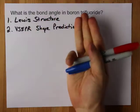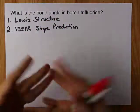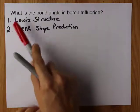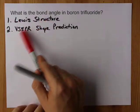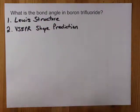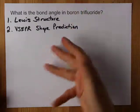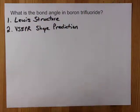When you are asked for the bond angle in a molecule, what your teacher is actually asking you to do is draw the Lewis structure and then predict the VSEPR shape. That's the shape of the molecule, because the shape of the molecule is going to be what tells you the bond angle.